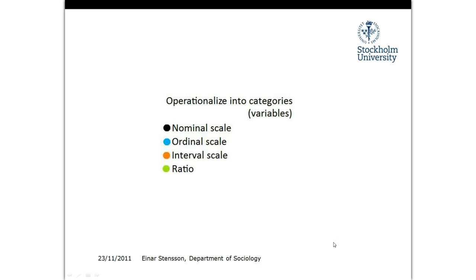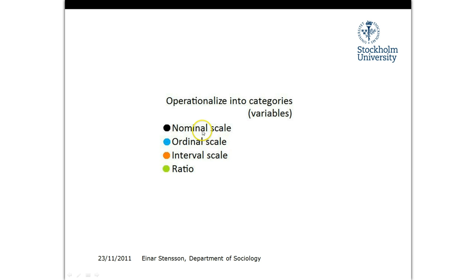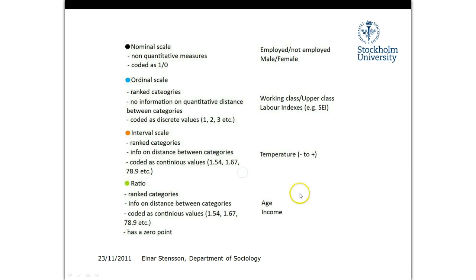What you do is take all of these — the people, actions, events, etc. — and operationalize them into categories, or variables as we're going to call them from now on. They are defined on nominal, ordinal, interval, and ratio scale. What are the definitions of these?